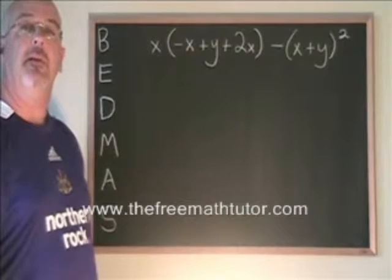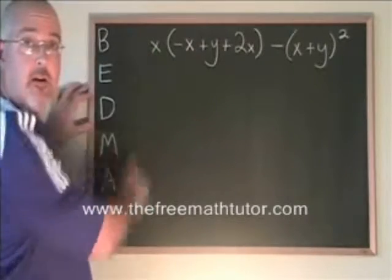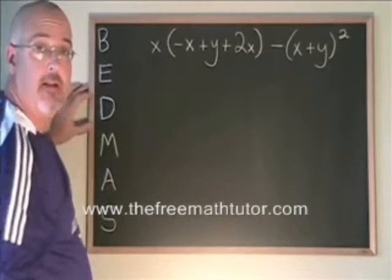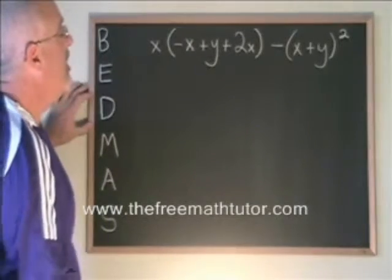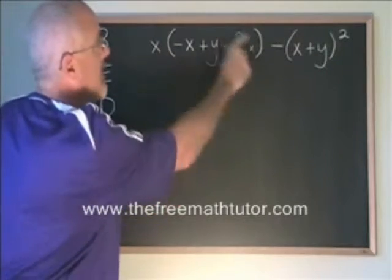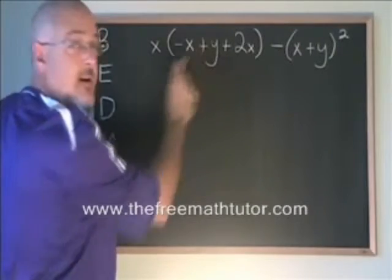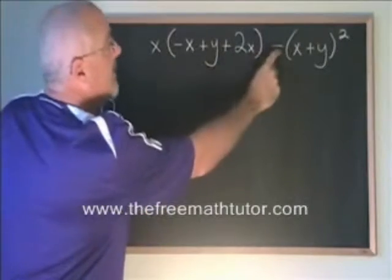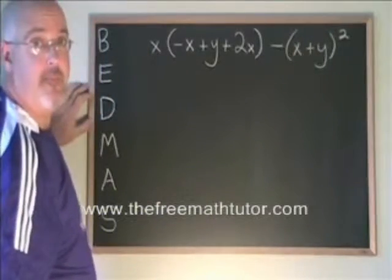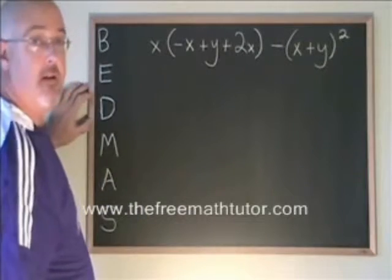Our second example is a little longer, so I erased most of the words over here. Hopefully by now you remember what the letters in BEDMAS stand for. Here we have a multiplication, x is being multiplied by this bracket. We have the bracket with an addition, a second addition inside of it. We have a subtraction, and we have a binomial that is being squared.